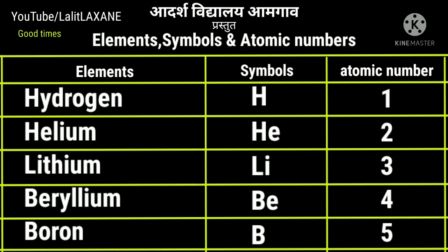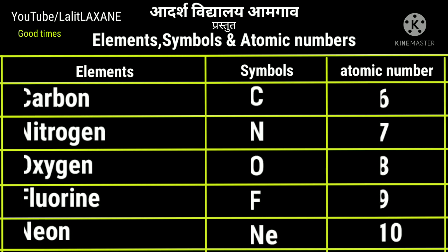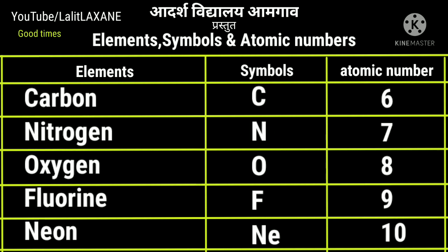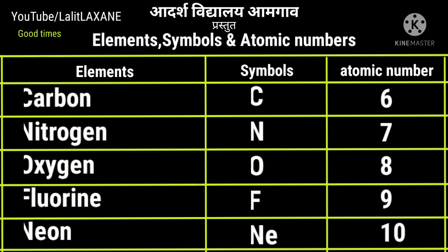Carbon with symbol C, atomic number 6. Nitrogen N with atomic number 7. Oxygen O with atomic number 8. Fluorine F with atomic number 9. Neon Ne with atomic number 10.